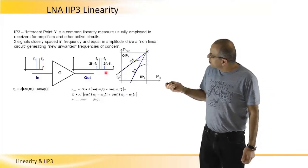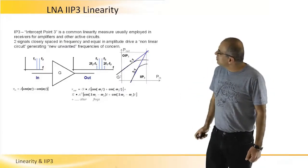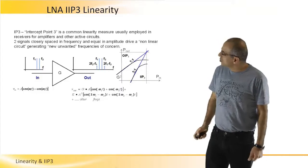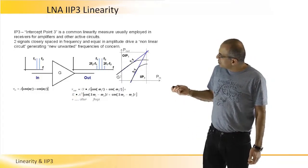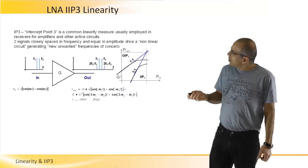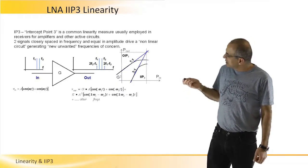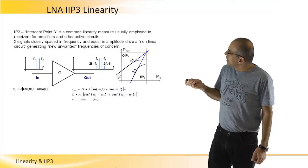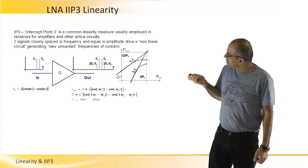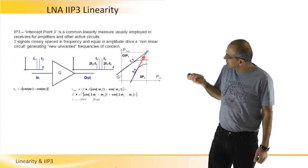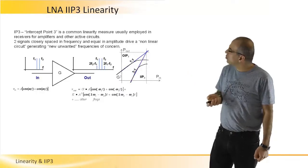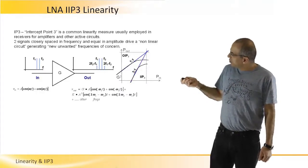These two new products, the third order products, will have a third order coefficient. If we look at the input power of the original signals amplified versus the new spurious products, the third order spurious products, and we draw the linear lines of these products along the input power